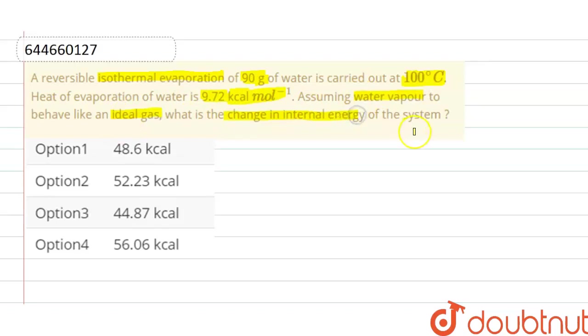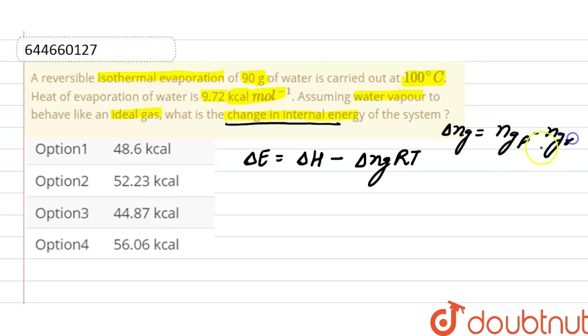In this question, we have to find out change in internal energy, and the formula here is delta E, that is change in internal energy, equals enthalpy change minus delta n_g R T, where delta n_g is the number of moles of gaseous product minus number of moles of gaseous reactant.